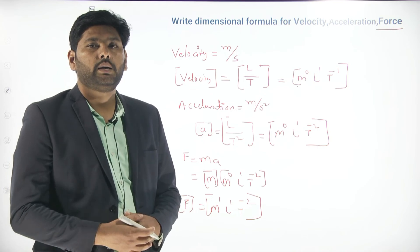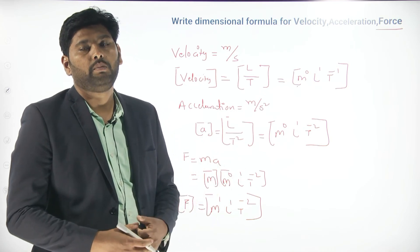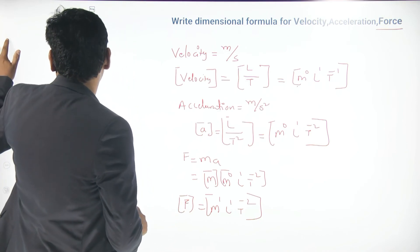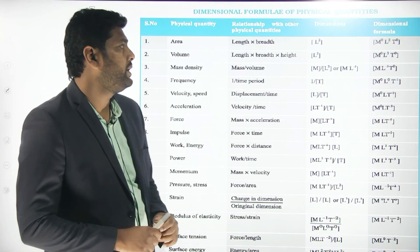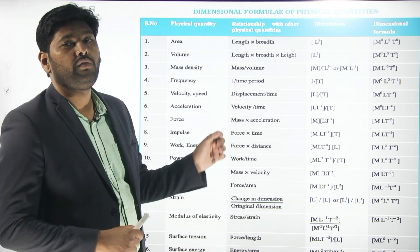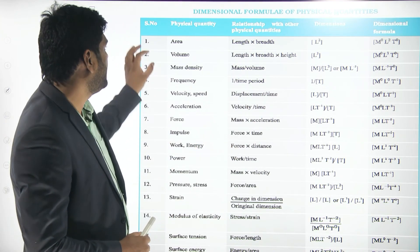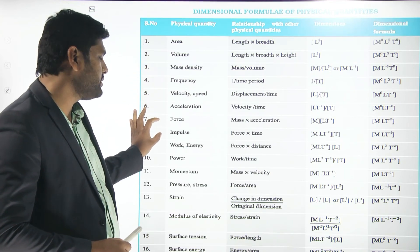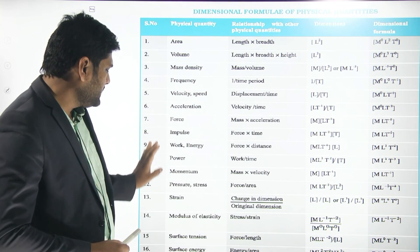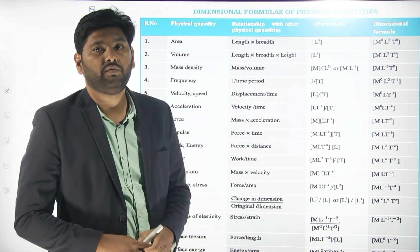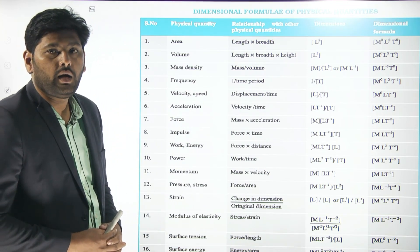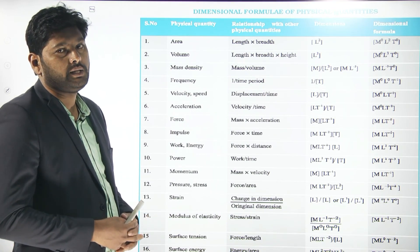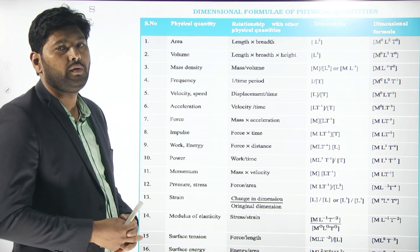I will now show some example dimension formulas in a chart. Look carefully at this chart showing dimension formulas for physical quantities including area, volume, mass, density, frequency, velocity, acceleration, force, and impulse. You can take a screenshot to understand these in a better way.